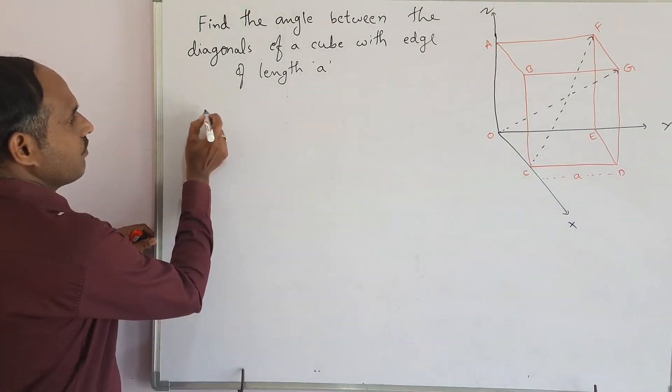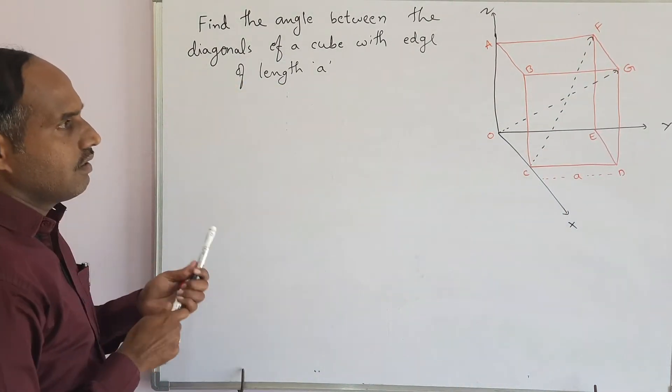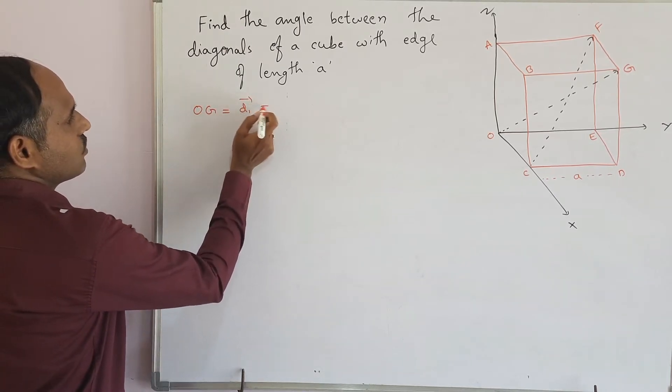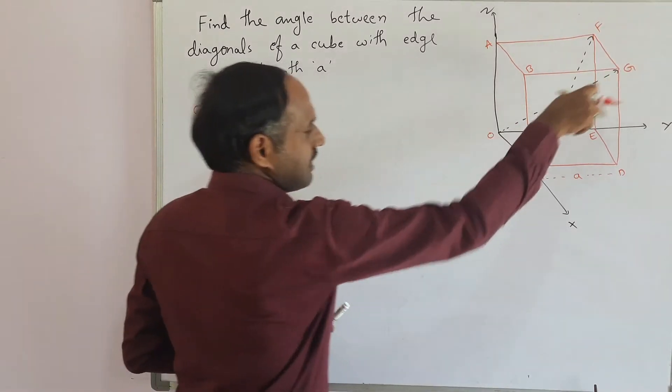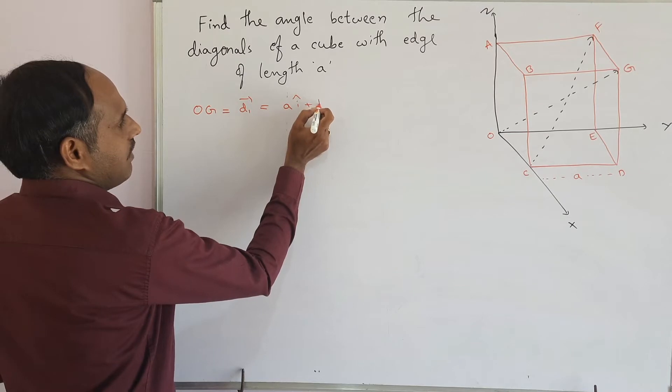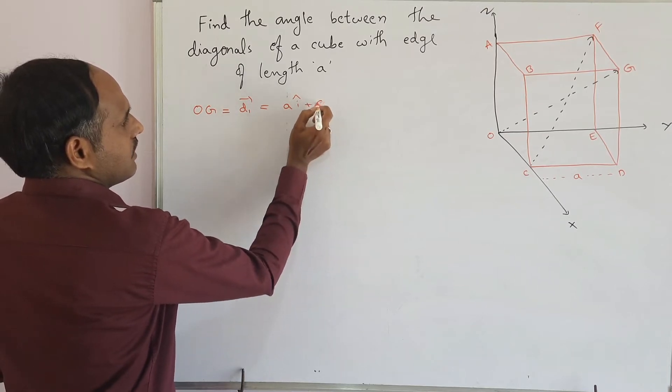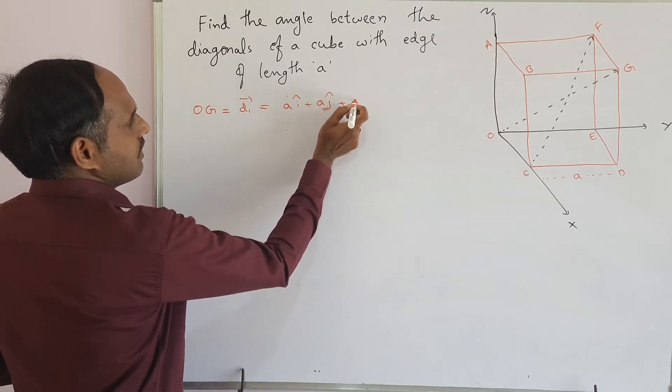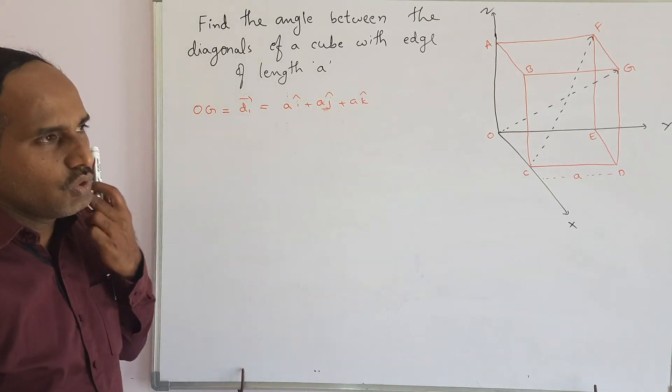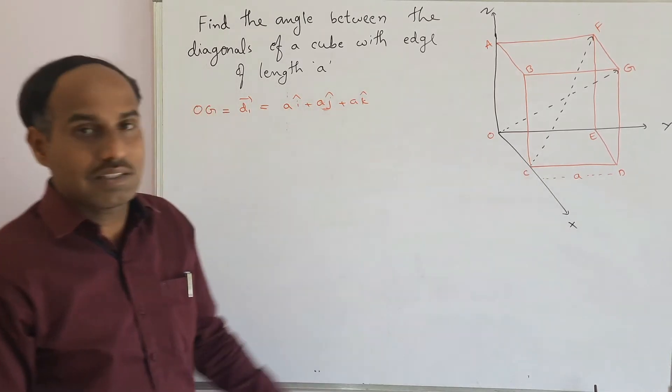So from the figure, we can take the diagonal OG which is D1 bar. As this OG is present in the XYZ space, we will take all the sides as the same. A i cap plus A j cap plus A k cap. Because it is a regular cube, all the sides are the same.